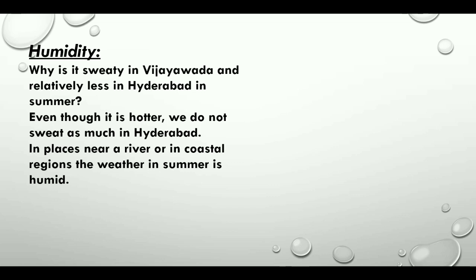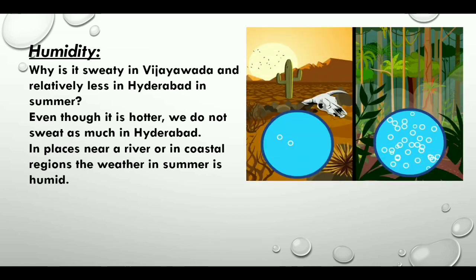In places near a river or in coastal regions, the weather in summer is humid. You can see here picture one is a dry land where the amount of water vapor is very less, and in the beside picture we can see the amount of water vapor in the atmosphere is more.